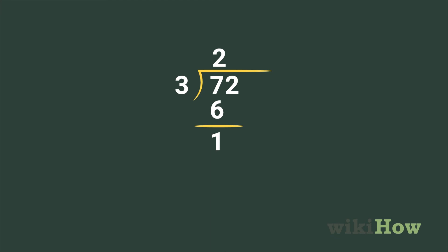Then, if there are any numbers left under the division bar, bring them down to the same row as the remainder. So in this case, you'd write a 2 beside the 1 to get 12.